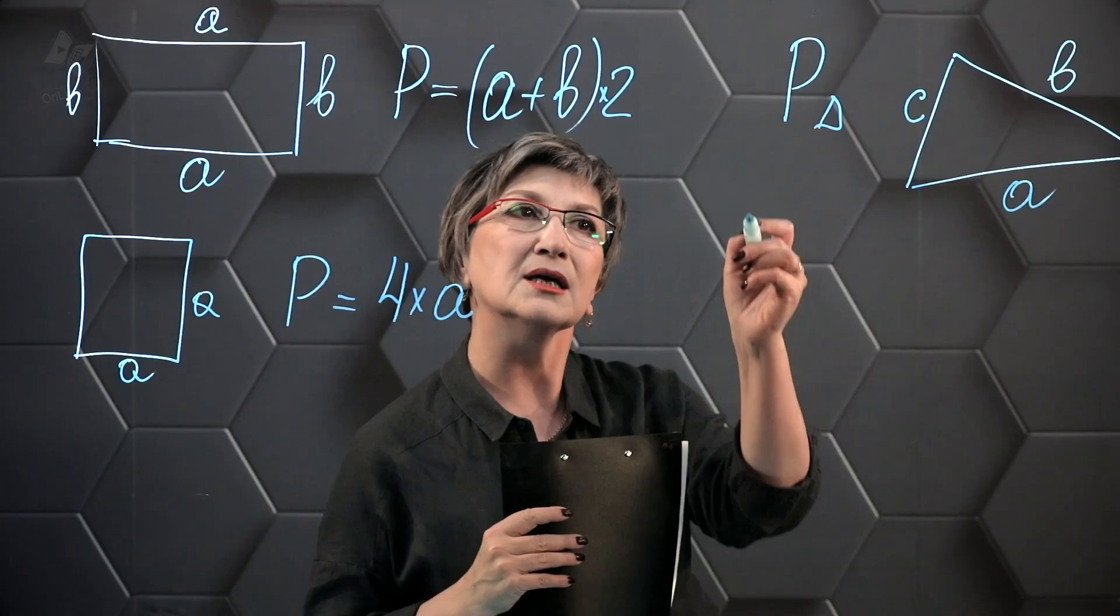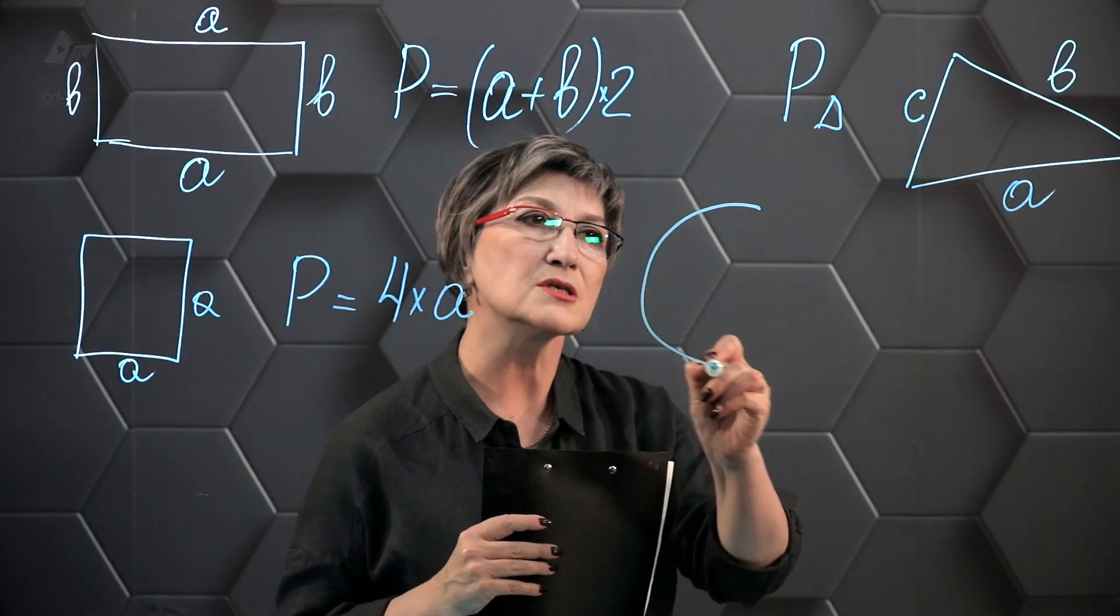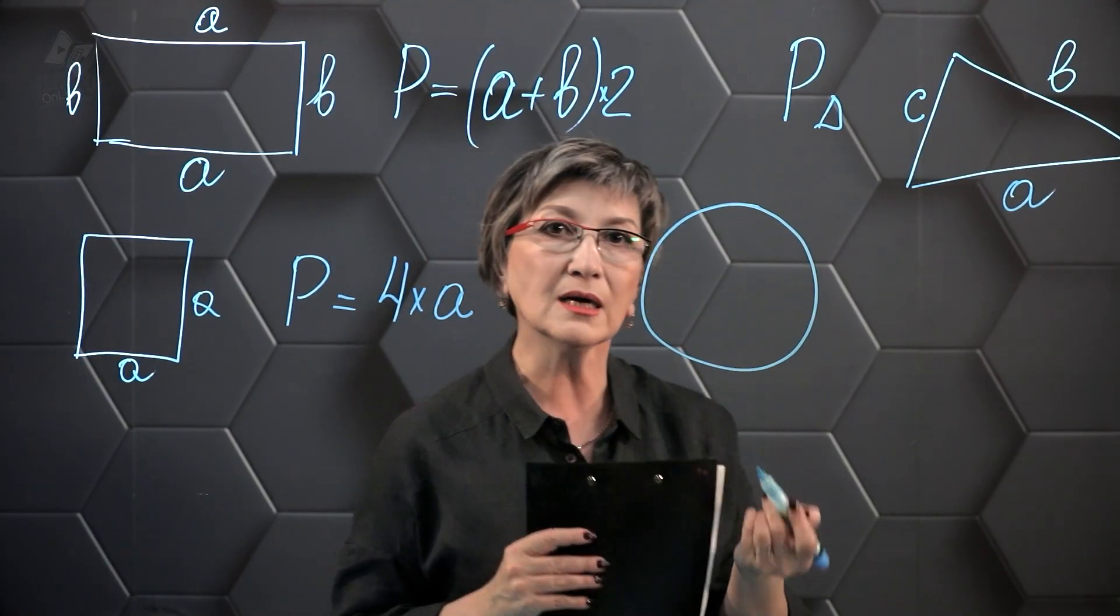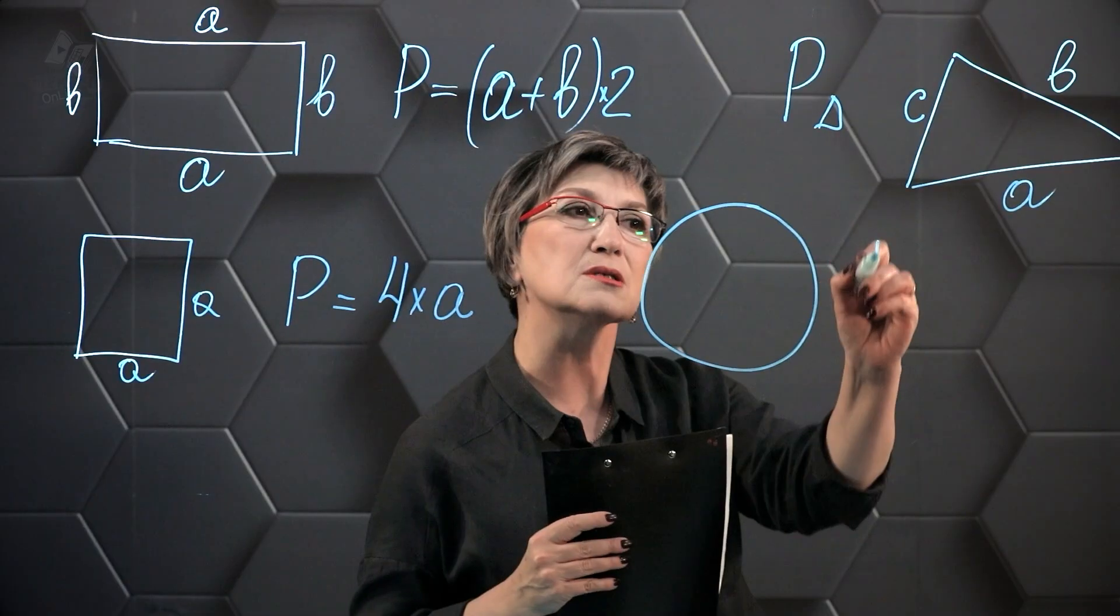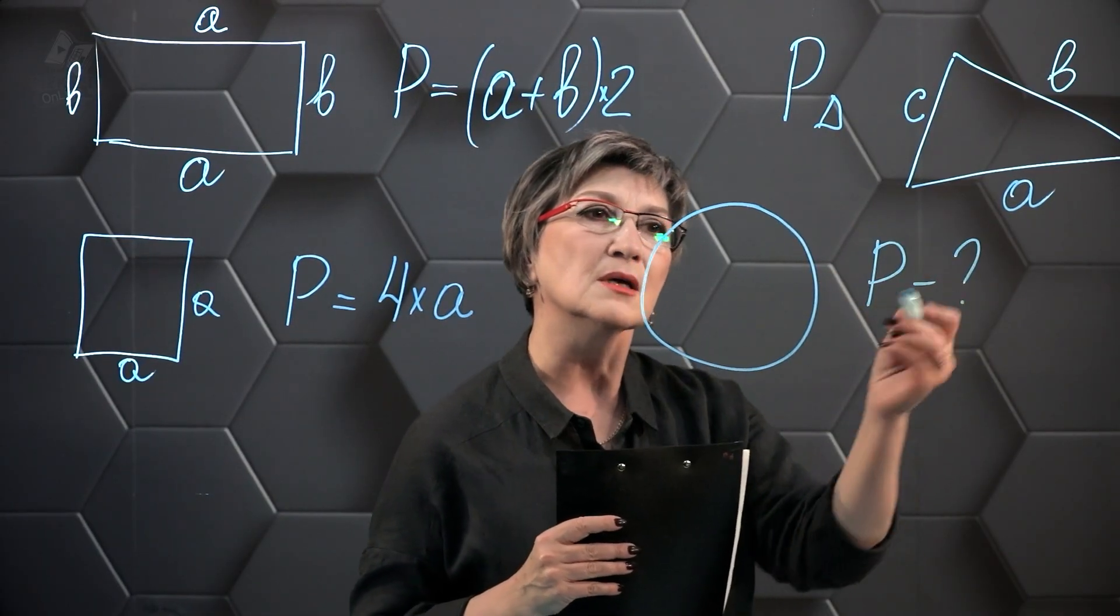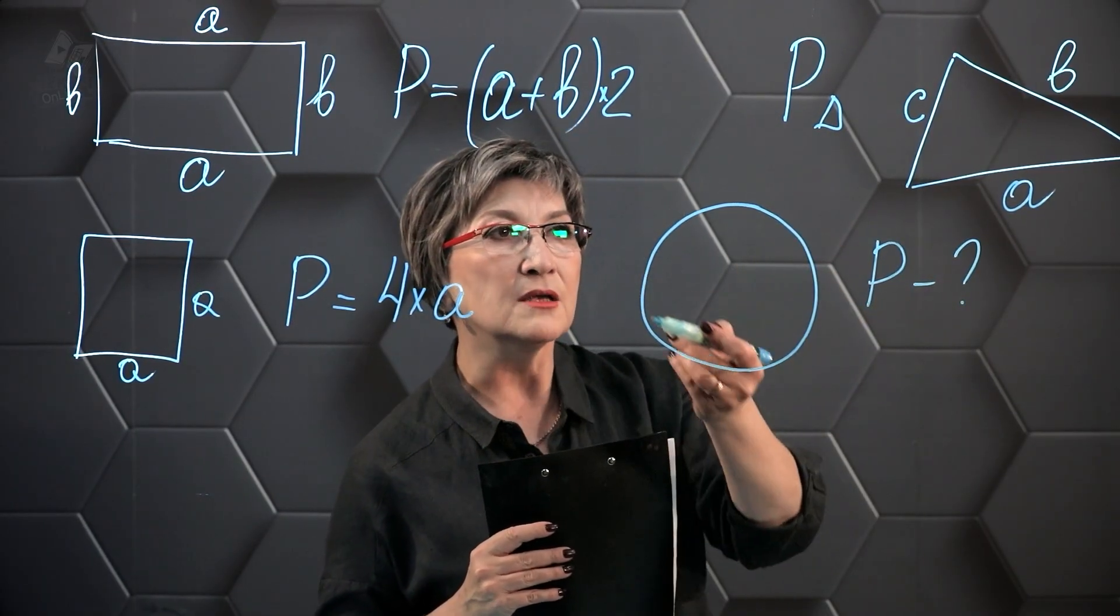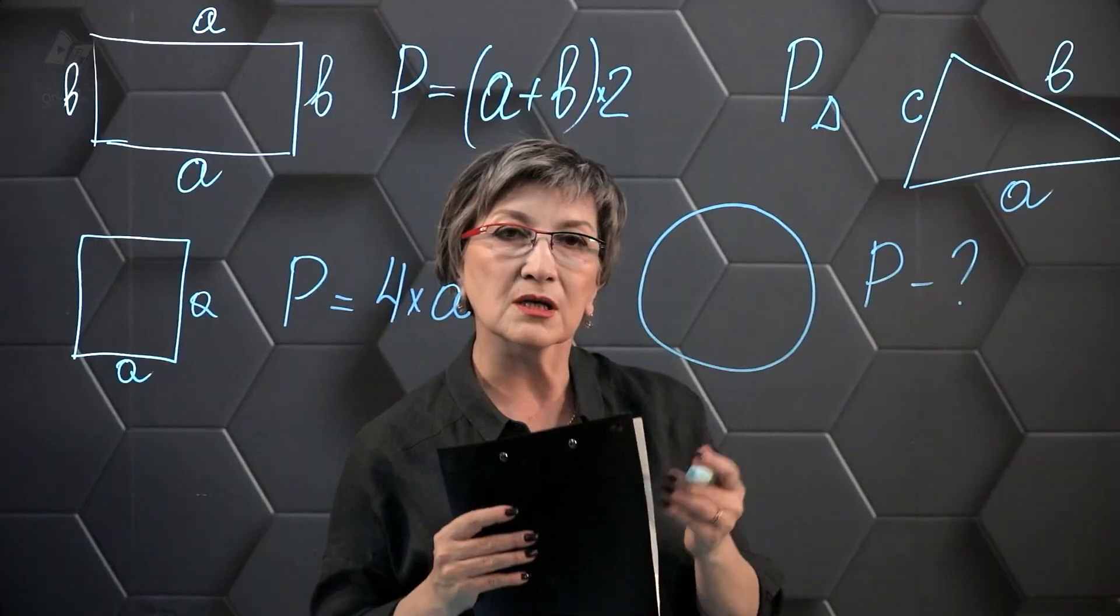But if we need to find the perimeter of a circle, how do we find the perimeter of a circle? After all, I don't see any sides here that I have to add up.